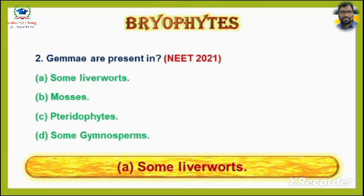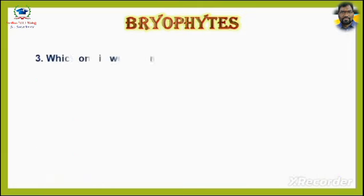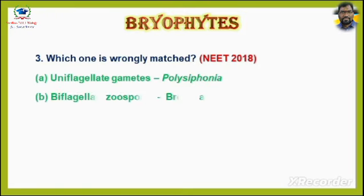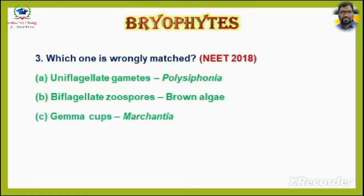Question No. 3. Which one is wrongly matched? Asked in NEET 2018. Options are: A. Uniflagellate gametes — Polysiphonia. B. Biflagellate zoospores — Brown algae. C. Gemma cups — Marchantia. D. Unicellular organism — Chlorella.